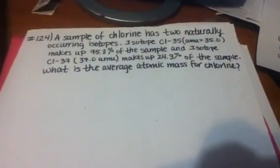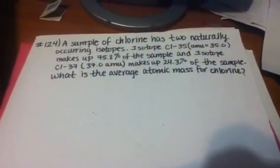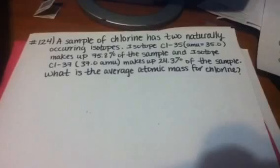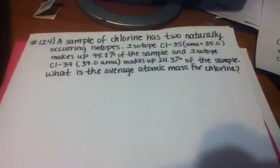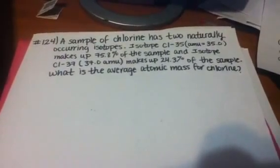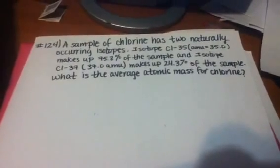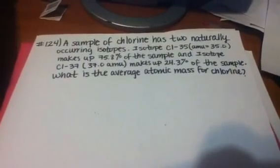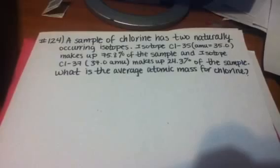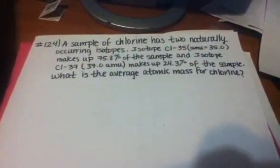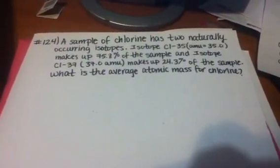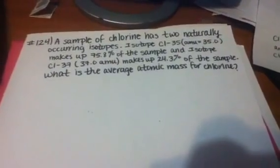A sample of chlorine has two naturally occurring isotopes. Isotope Cl-35, with a mass of 35 grams, makes up 75.8% of the sample. An isotope Cl-37, 37 grams, makes up 24.3% of the sample. What is the average atomic mass for chlorine?